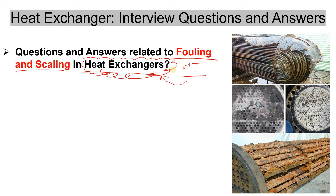When fouling and scaling comes into the picture, take one example: there is one heat exchanger which is already erected in the plant — whether it is a refinery plant, chemical industrial plant, or fertilizer plant. When it is erected and there will be some operation going on, then only the fouling and scaling will come into the picture. While designing or sizing, we take some margin or factor with respect to fouling and scaling.